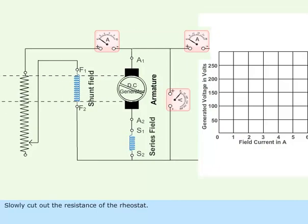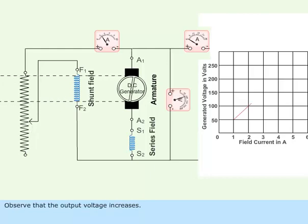Slowly cut out the resistance of the rheostat. Observe that the output voltage increases.